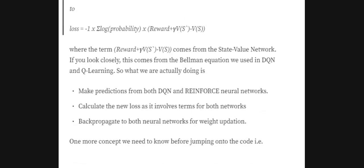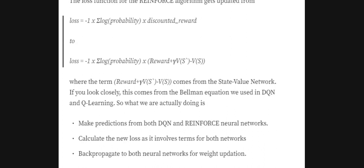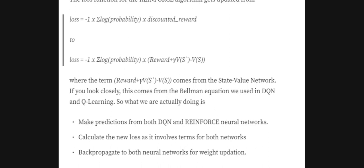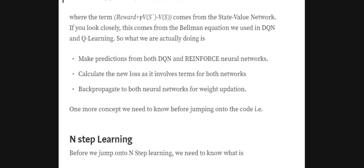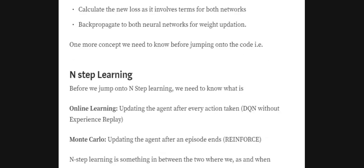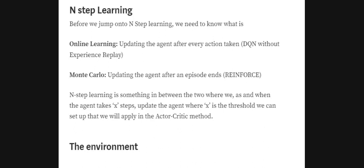We will also have a loss function for the DQN (Critic), which is the mean squared error between the target Q-value and the predicted Q-value. The total loss function for the Actor-Critic method is this policy loss plus the mean squared error between the target Q-value and the predicted Q-value.